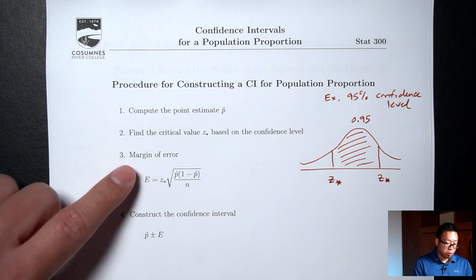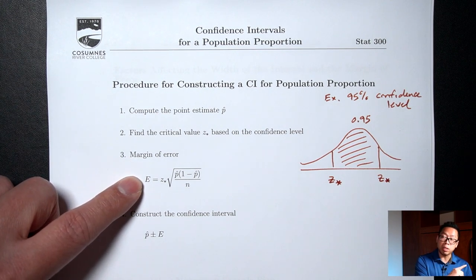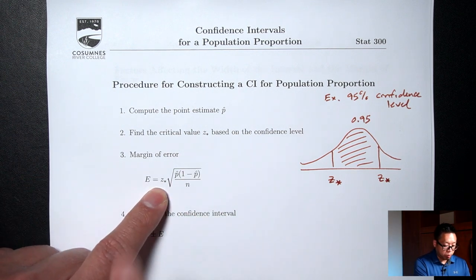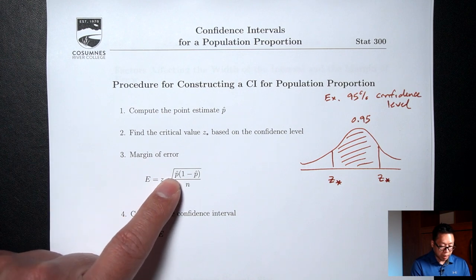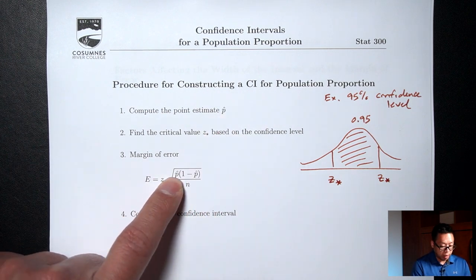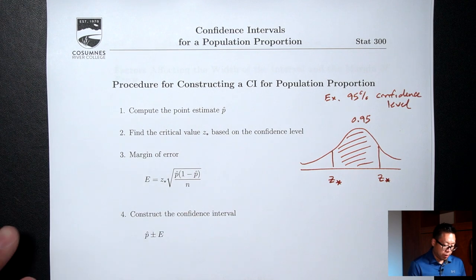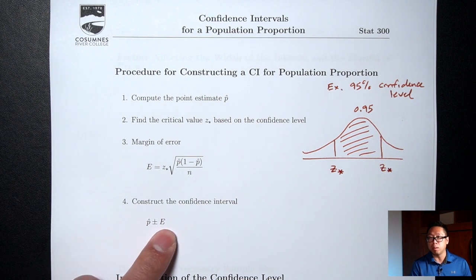Step three: compute the margin of error. This is the plus or minus 3.5% from the article, and this is how they found it: z-star times the square root of p-hat times (1 minus p-hat) over n, where n is the sample size — how many people you asked. Step four: construct the confidence interval by doing p-hat plus or minus the margin of error.